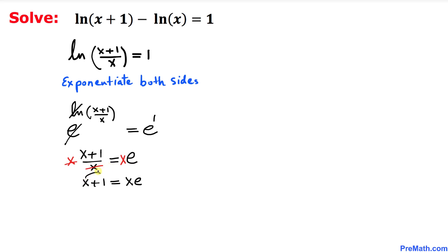Now let's move this x to the right hand side, so we end up with 1 equal to x e minus x. And now we can factor out x, so we end up with x times e minus 1.